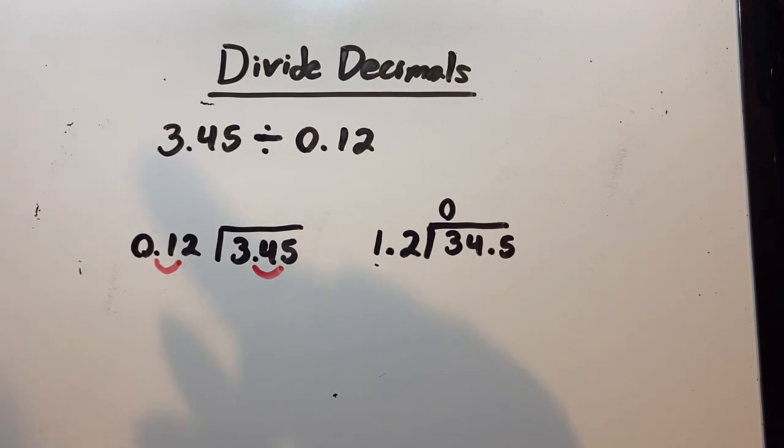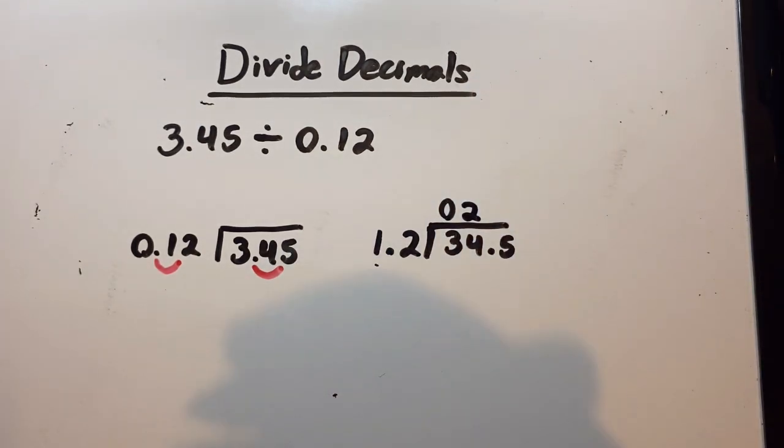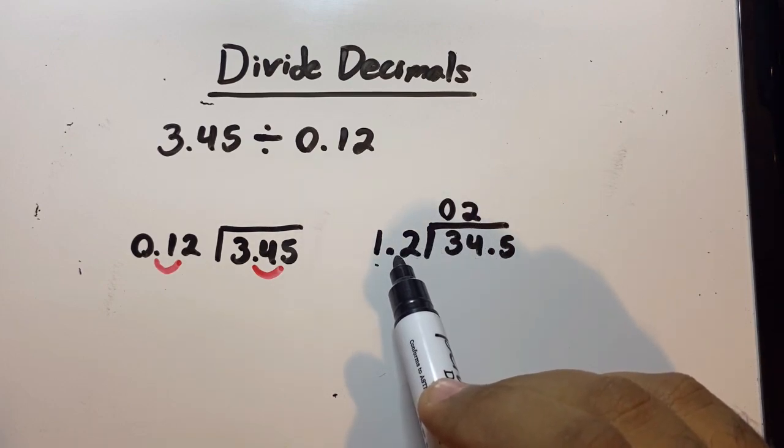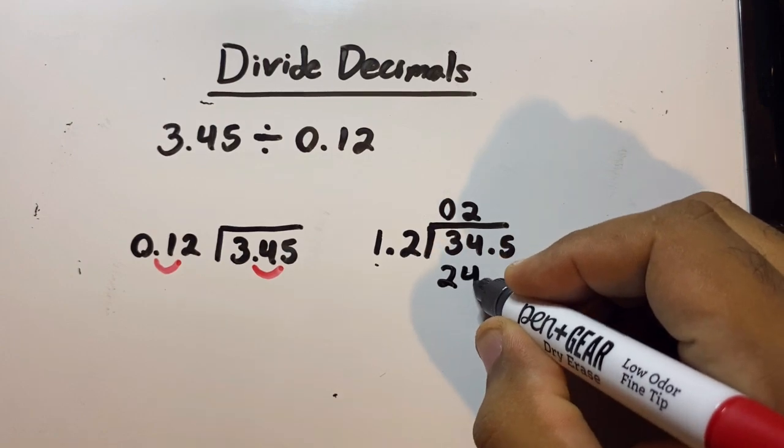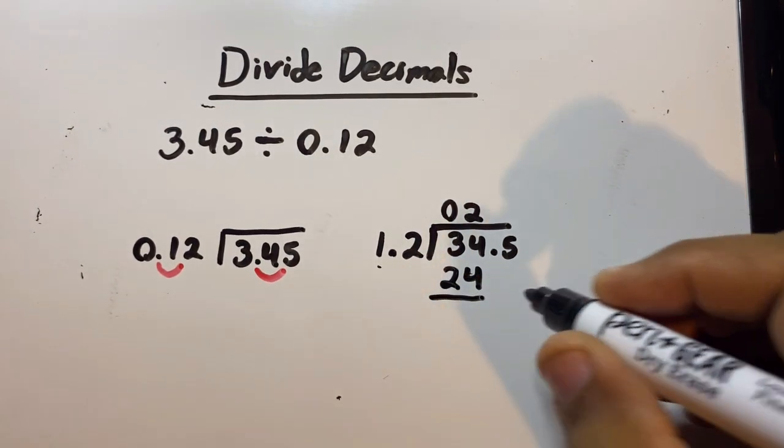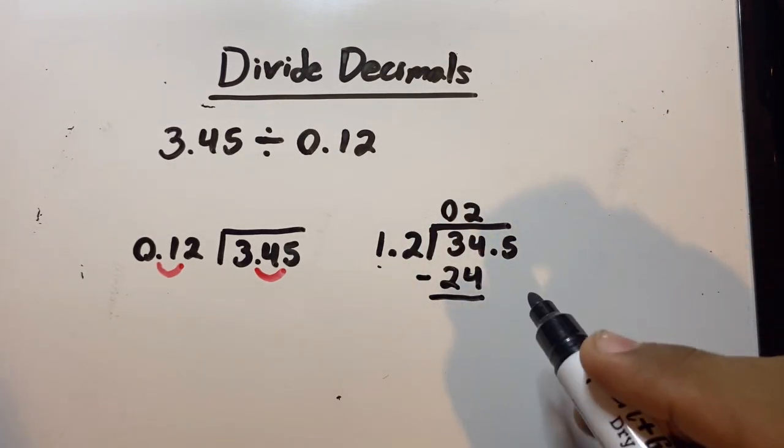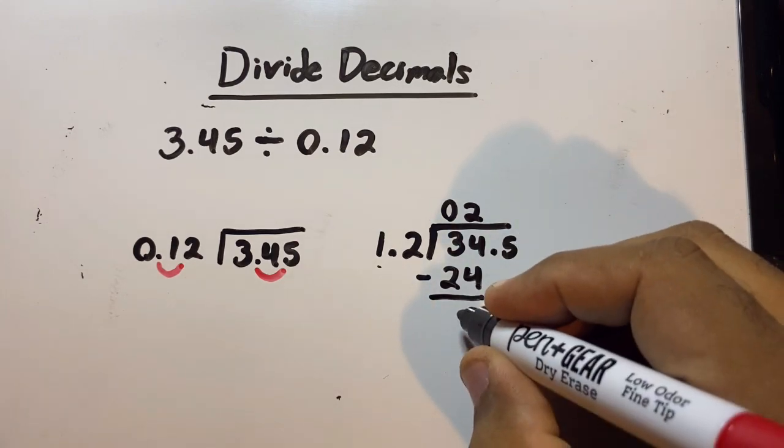So we'll put the 2 here. Now here comes the part where you need to know how to multiply. The number up top is going to be multiplied to the number on the outside, so 2 times 12 is 24. And then you're going to subtract that number, so 34 minus 24 is 10.